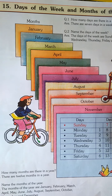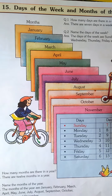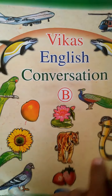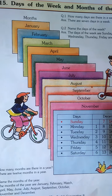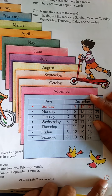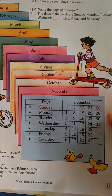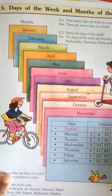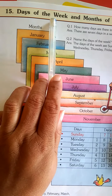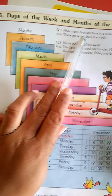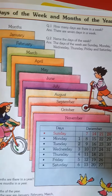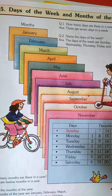Good morning, children. Open your Vikas English Conversation Book B, on page number 17. See number 15: days of the week and months of the year. Days of the week and months of the year. Yes, children.